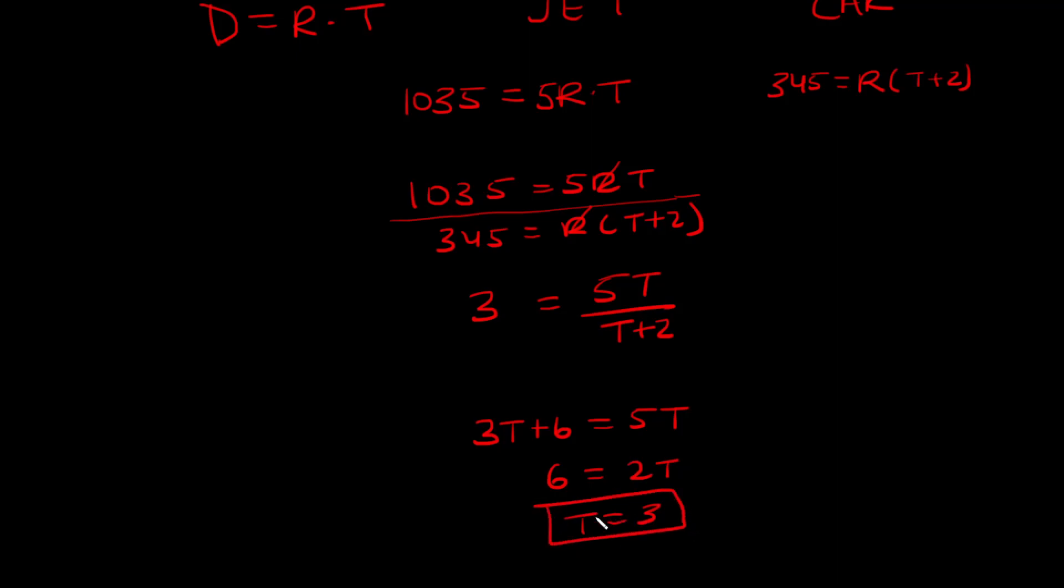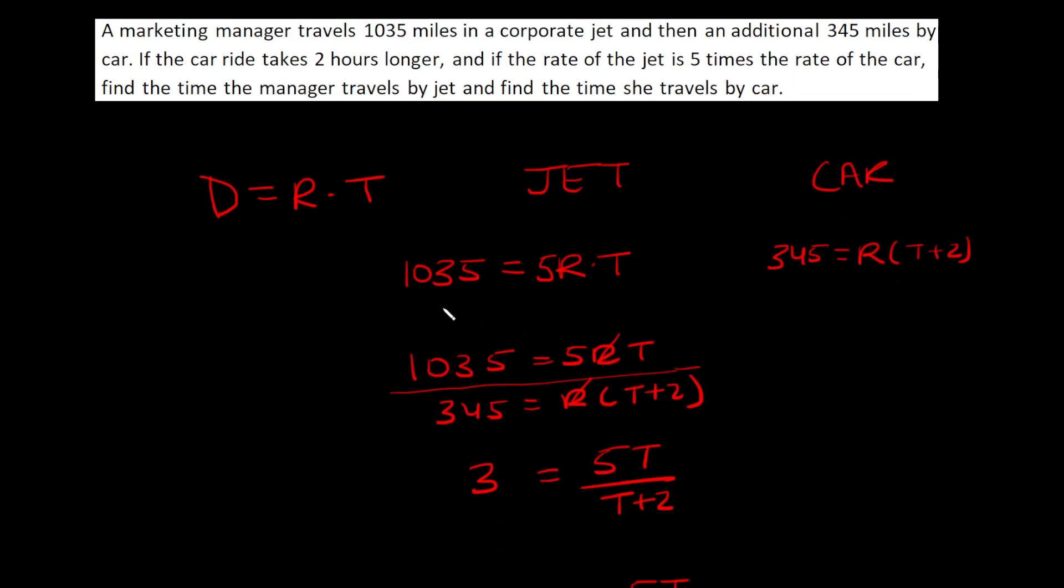What does that mean? T is the time the jet took to travel 1,035 miles. So the time the manager travels by jet is 3 hours, and by car it's 2 more hours, which is 5 hours. Those are our answers.